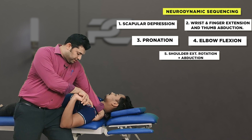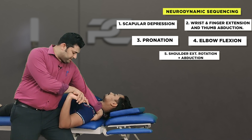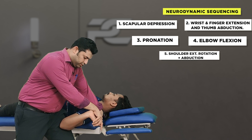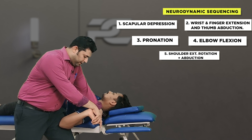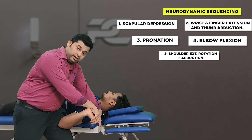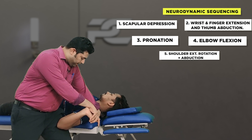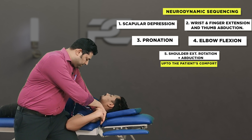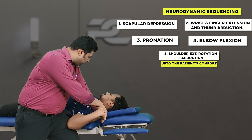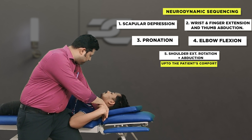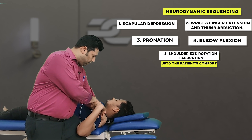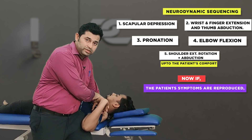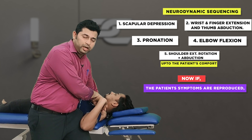The therapist next externally rotates the shoulder joint, and while maintaining this external rotation, slowly starts abducting the patient's shoulder while watching the patient's symptoms.